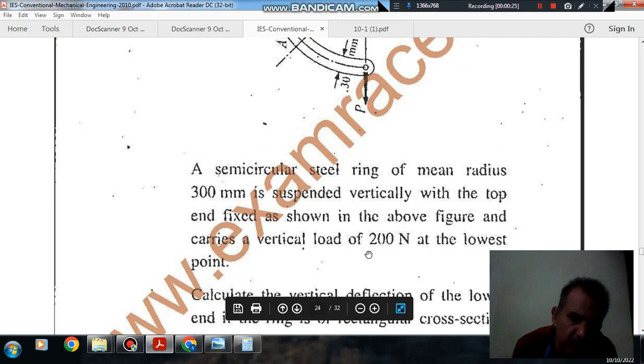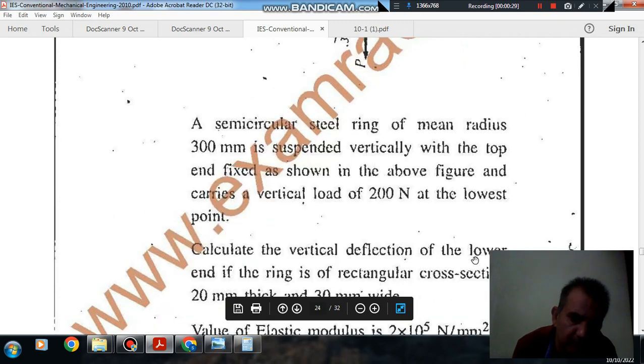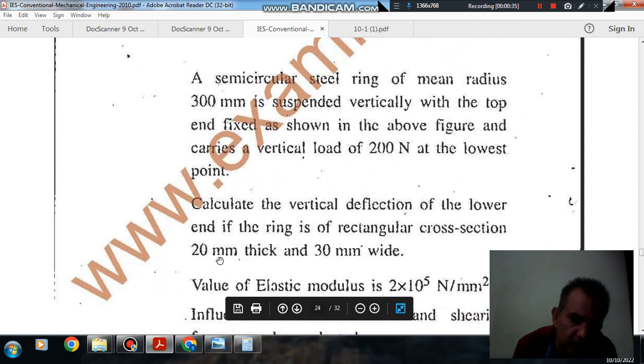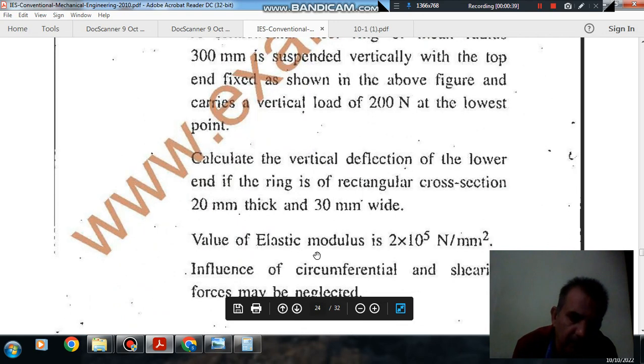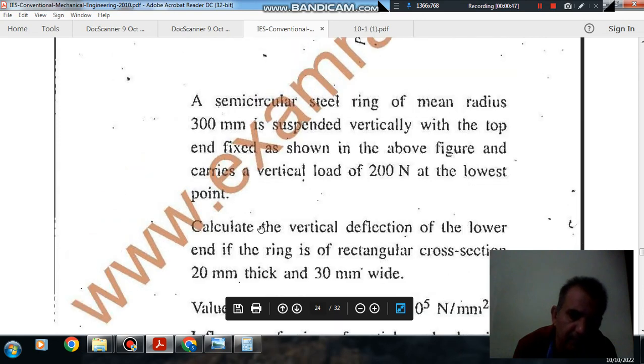It carries a vertical load of 200 Newton at the lowest point. Calculate the vertical deflection of the lower end if the ring is of rectangular cross section, 20 mm thick and 30 mm wide. The value of elastic modulus is 2 into 10^5 Newton per mm square. Influence of circumferential and shearing forces may be neglected.